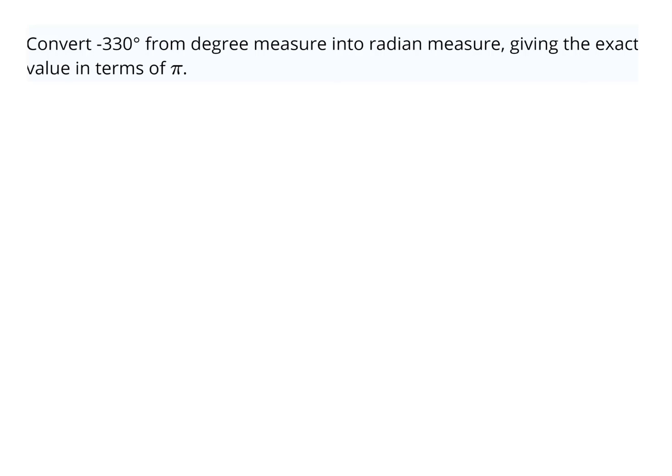Here we want to convert negative 330 degrees from degree measure to radian measure, and we want an exact answer in terms of pi.